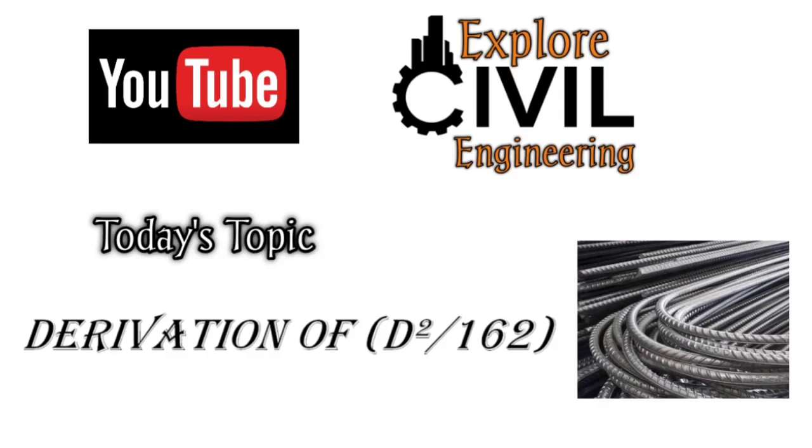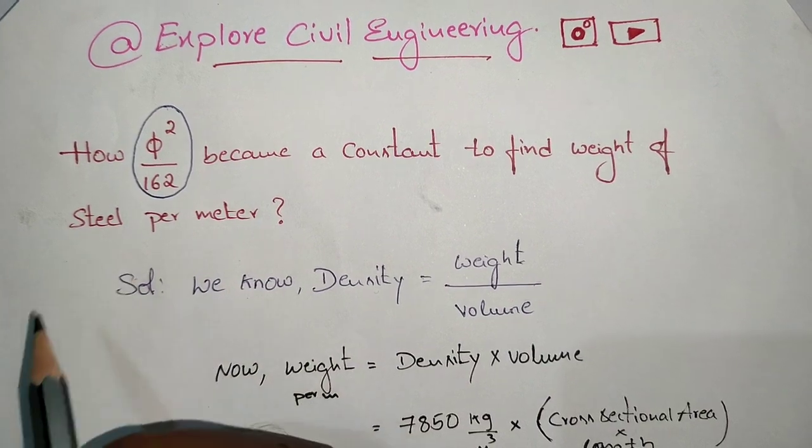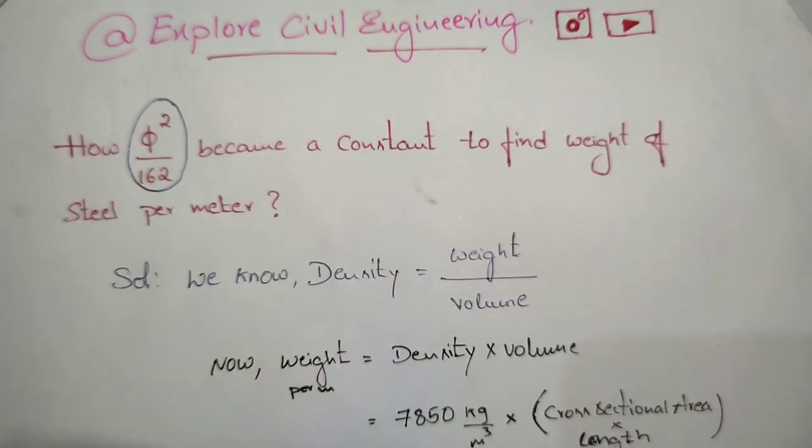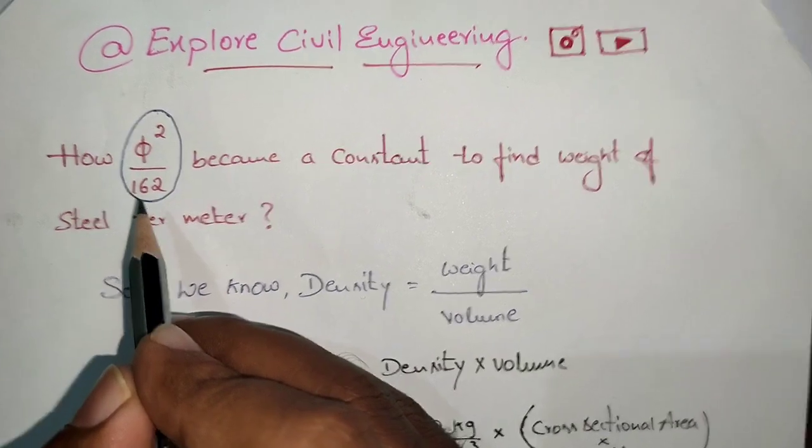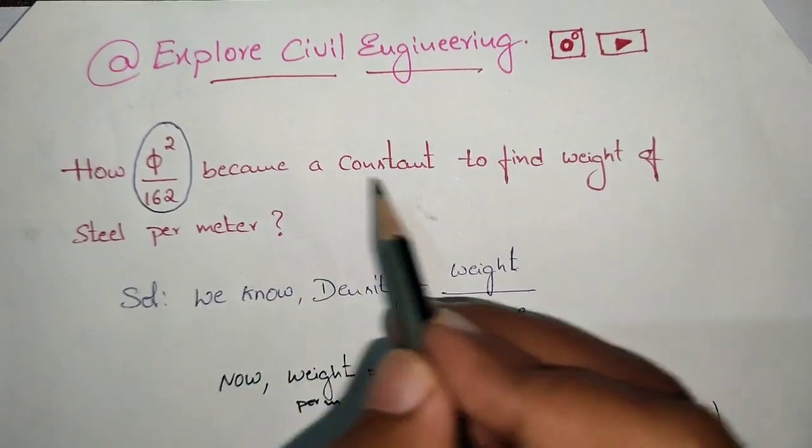Hi everyone, welcome to the channel. Today's topic is derivation of d²/162. Now d² is also known as φ². d² is represented by φ². Now how φ²/162 became a constant to find weight of steel per meter.